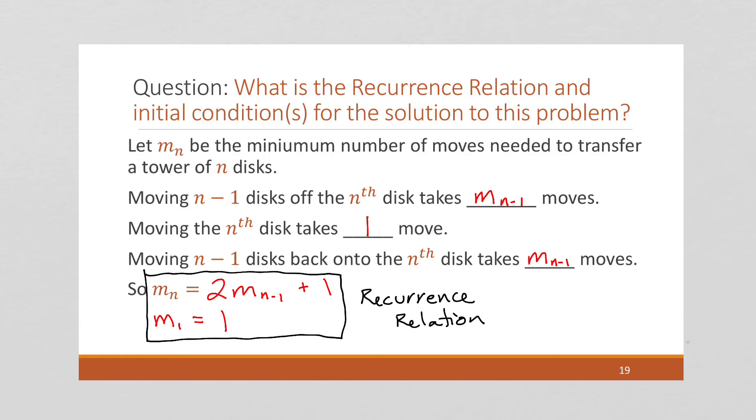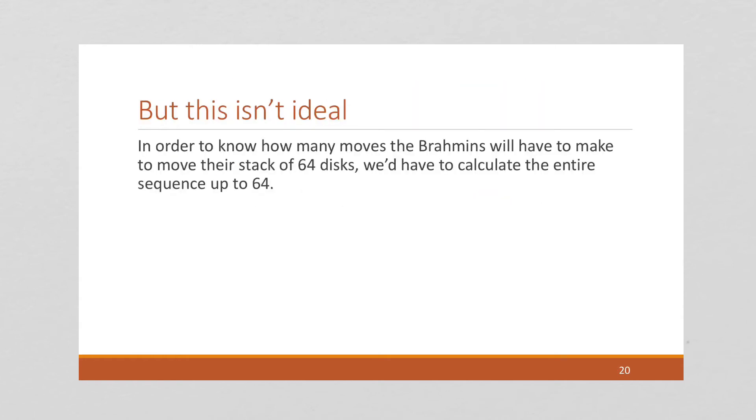So we have a recurrence relation, but we really don't have an answer yet. We still don't know how many moves it's going to take to move all the blocks, the 64 blocks, or 64 golden disks that are part of the puzzle. To do this, we're going to have to calculate m of 64 is going to be 2 times m of 63 plus 1. And m of 63 is going to be 2 times m of 62 plus 1. And m of 62 is going to be 2 times m of 61 plus 1, and so on. And I'm going to get really tired of doing that really, really quickly. And so our goal, as in the previous videos, is we want to convert this to an explicit formula.